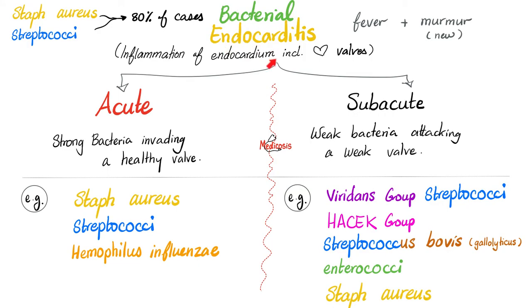What's the difference between acute bacterial endocarditis and subacute bacterial endocarditis? If the bacteria has high virulence and the heart valve was healthy before the infection, and suddenly the bacteria came and destroyed the valve very quickly — this is acute bacterial endocarditis. Such as nasty Staphylococcus aureus, Streptococcus, and Haemophilus influenzae. As for subacute, it's a weaker bacteria with lower virulence attacking a weak valve.